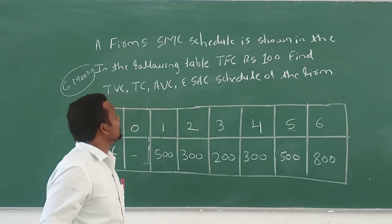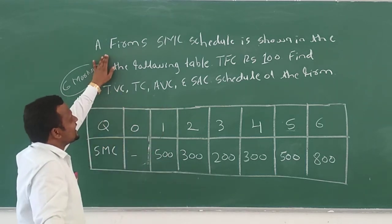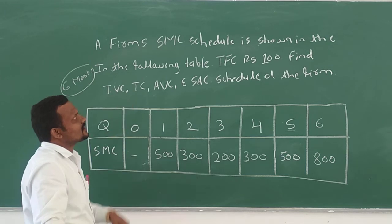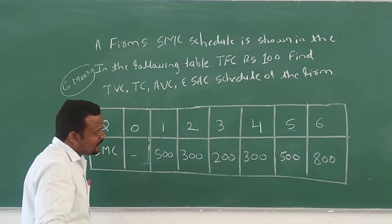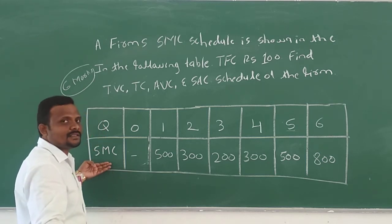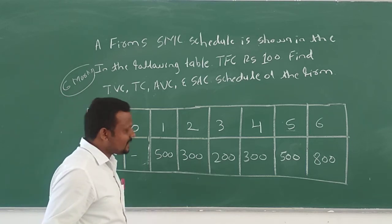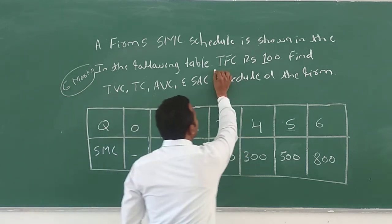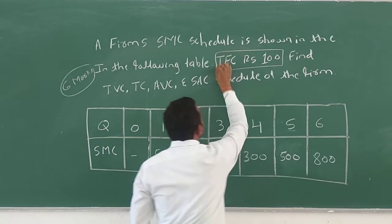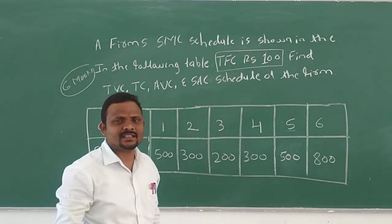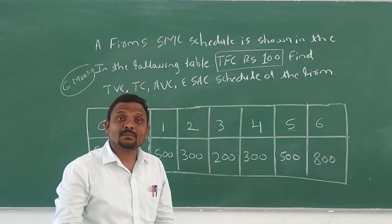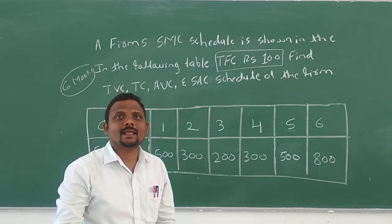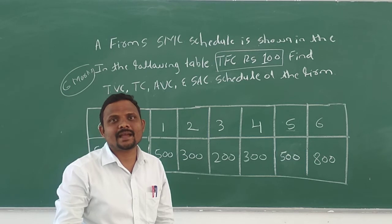The last question: the firm's SMC — short-term marginal cost — schedule is shown in the following table. This shows the short-term marginal cost. TFC means total fixed cost, which is 100. In this case, the cost never changes — if production is increased, decreased, or becomes zero, the total fixed cost remains the same.